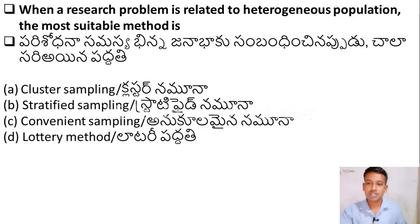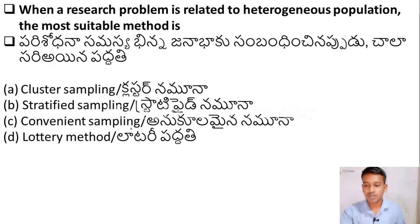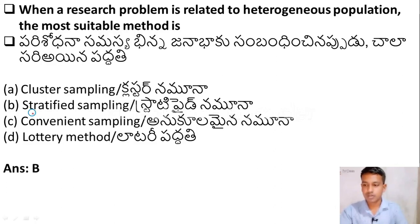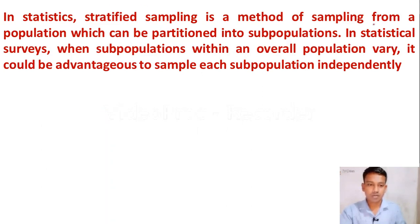The next question: when a research problem is related to a heterogeneous population, the most suitable method is — Option A: Cluster sampling, Option B: Stratified sampling, Option C: Convenient sampling, Option D: Lottery method. When the research problem is related to a heterogeneous population, the researcher will use stratified sampling. Stratified sampling is a method of sampling from a population which can be partitioned into subpopulations, and then using random sampling to select groups.